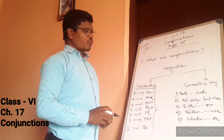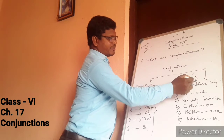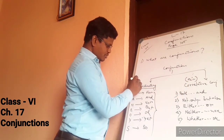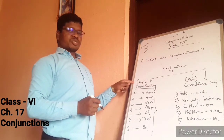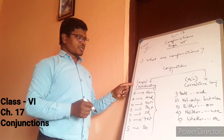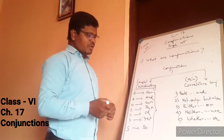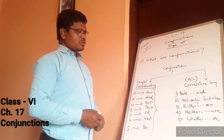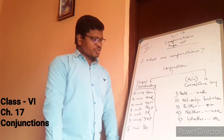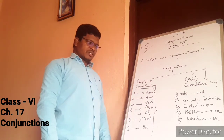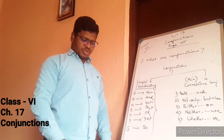Let's see the examples of co-relative conjunctions. Co-ordinating conjunctions are always used singly, whereas co-relative conjunctions are always used in pairs. The pairs are: both...and, not only...but also, either...or, neither...nor, and whether...or. These are a few examples of co-relative conjunctions.